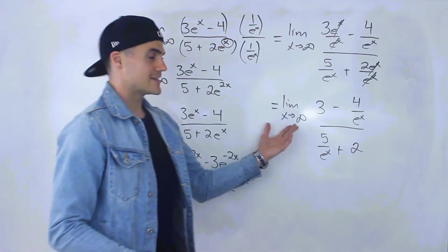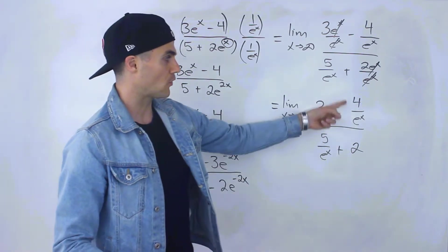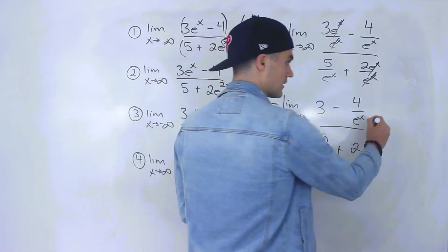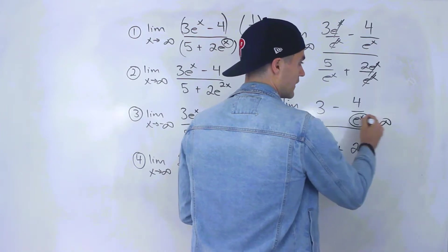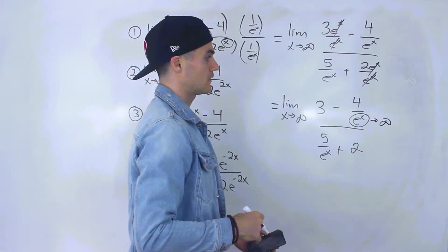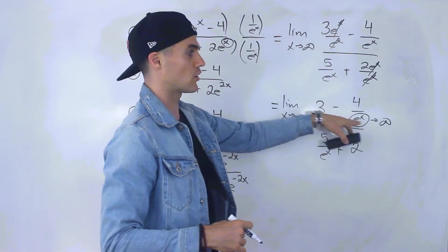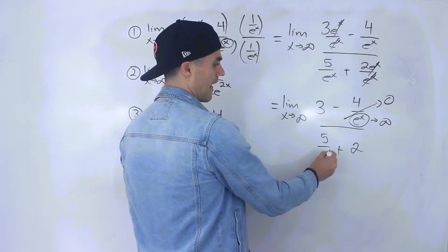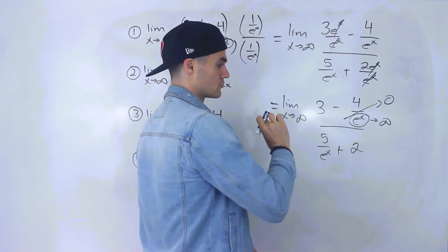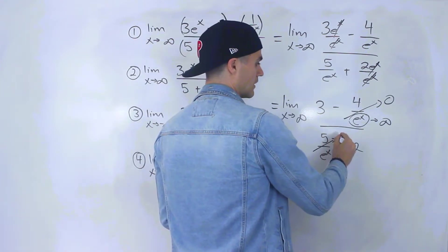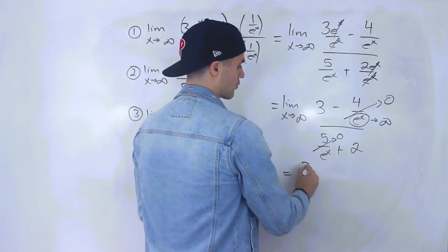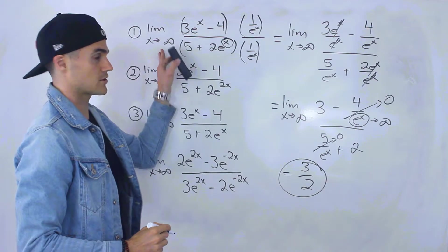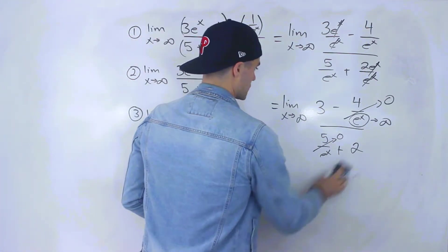Now we can plug in the infinity value. As x approaches infinity, e^x approaches infinity, so 4 over e^x approaches zero and 5 over e^x approaches zero. We end up with 3 over 2, and that is the answer to number one.